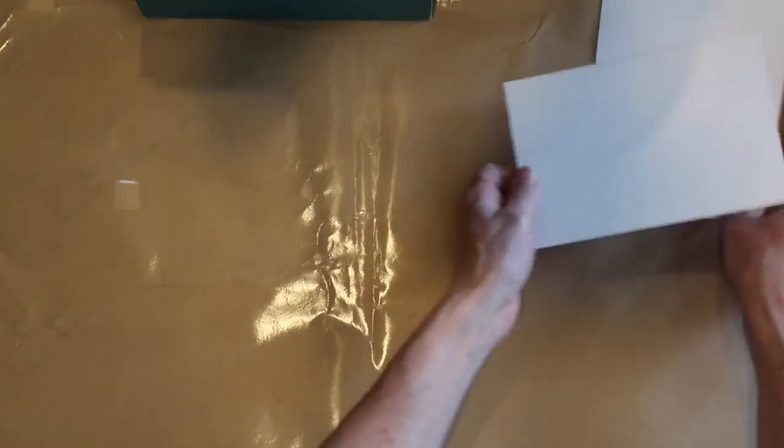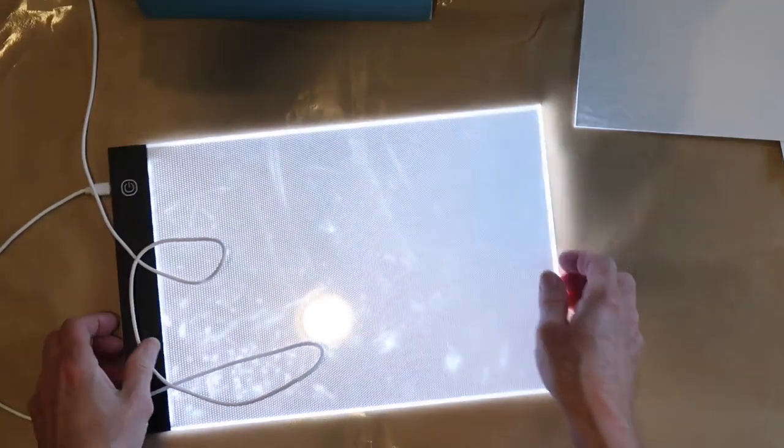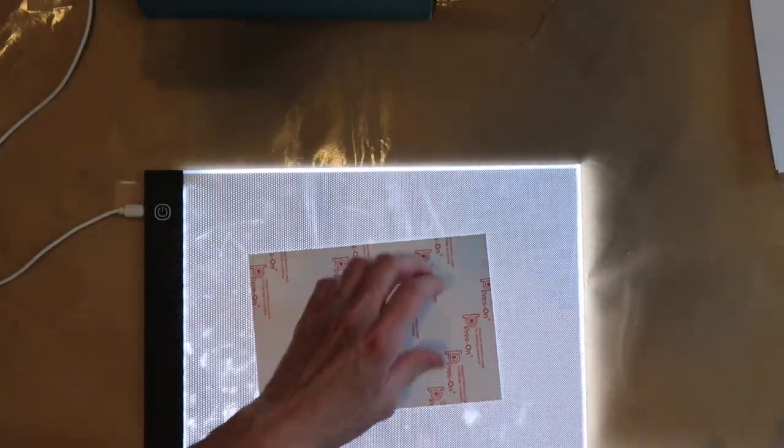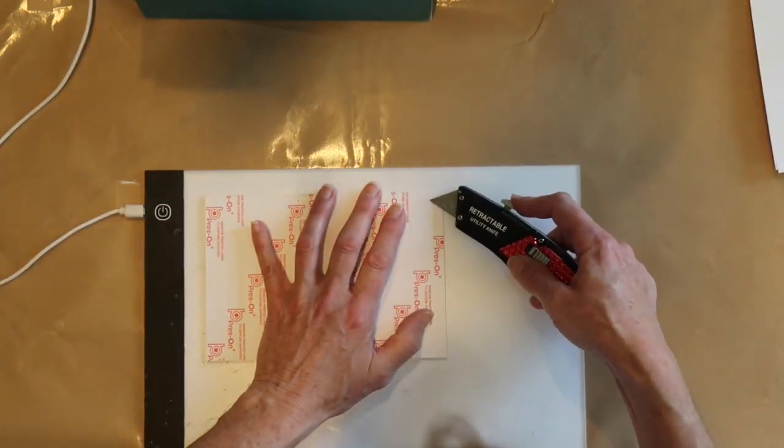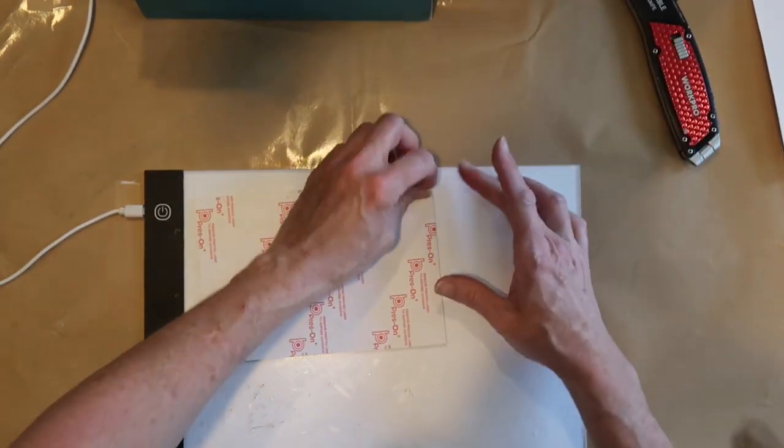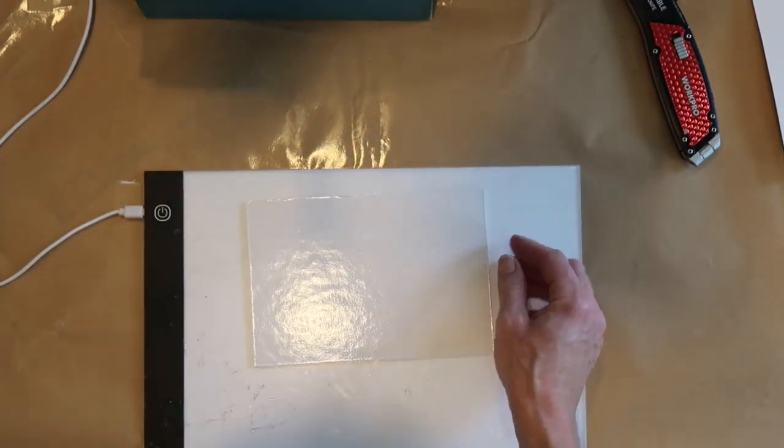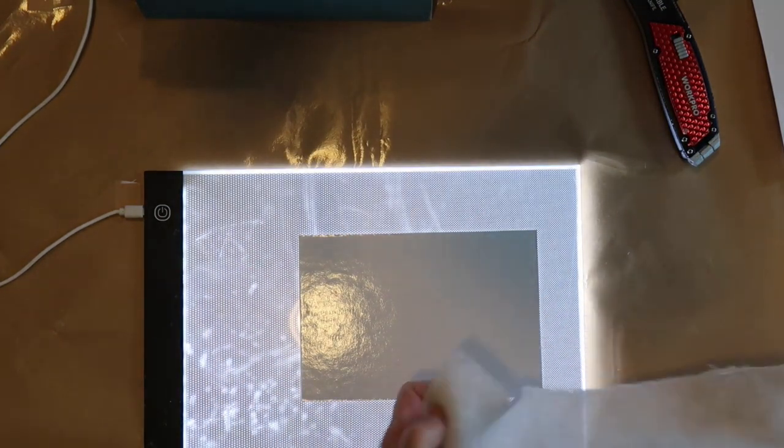All righty, so I have my piece here and what I use to line up over my sticky board is I use this light. I need to plug this in real quick. Okay, so I'm going to take this part off the sticky board. What I do is I just use something sharp, my little knife, to get that off.